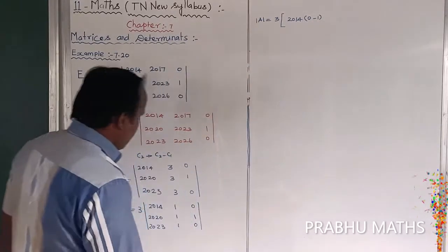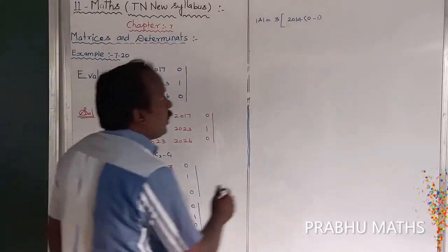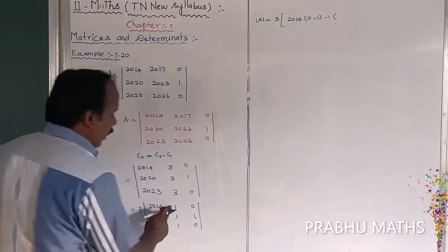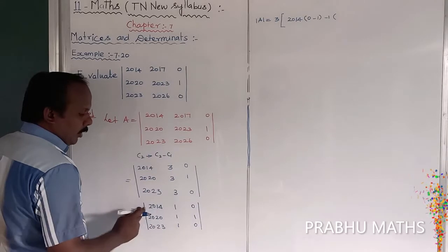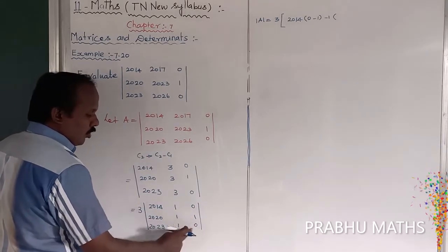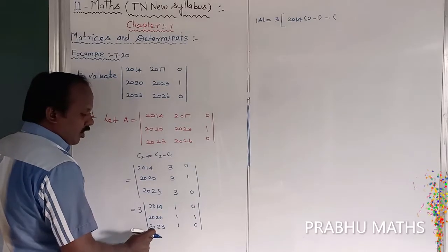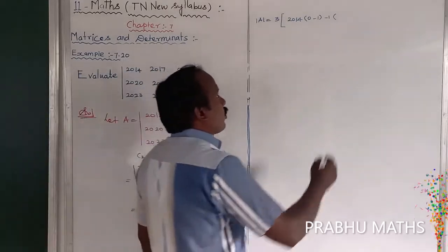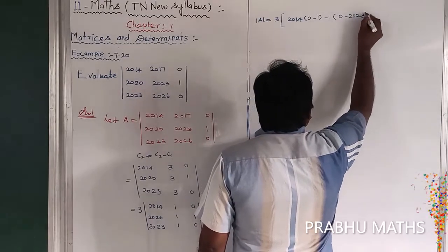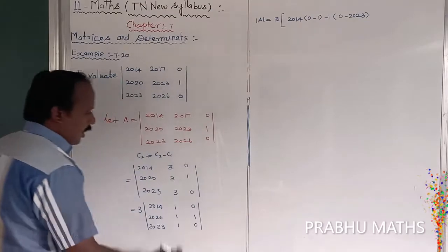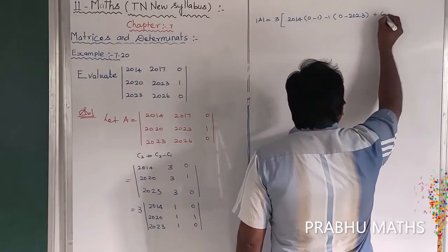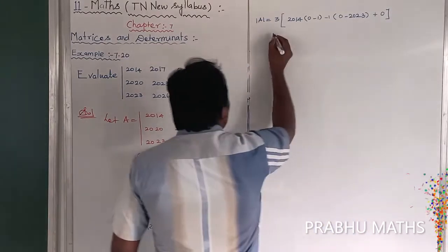First one, okay. The second one is going to, generally this term is minus 1 into the minor of 1. The entire column, entire row should be closed, so 2020 into 0 is 0, 2023 into 1 is 2023, so 0 minus 2023. The last one is 0, so the full value should be 0, so it is 0.